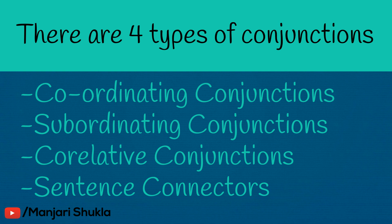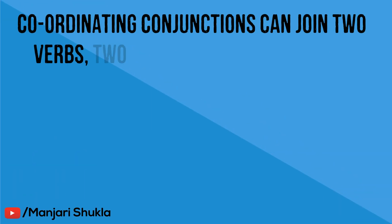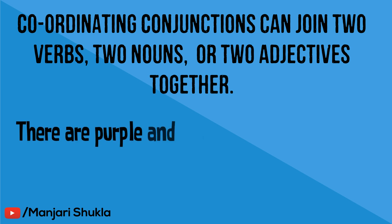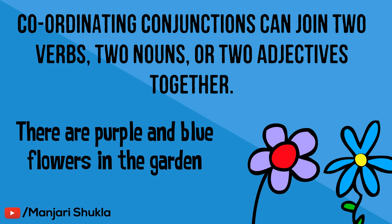Let's learn about these four types of conjunctions together. Coordinating conjunctions can join two verbs, two nouns, or two adjectives together. For example: 'There are purple and blue flowers in the garden.' In this sentence, the conjunction AND is joining the two adjectives purple and blue. So this is an example of how we use coordinating conjunctions — joining two adjectives, or verbs, or nouns.